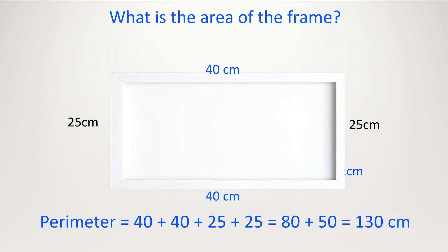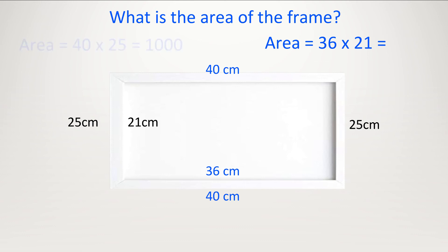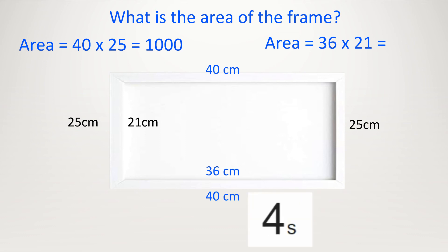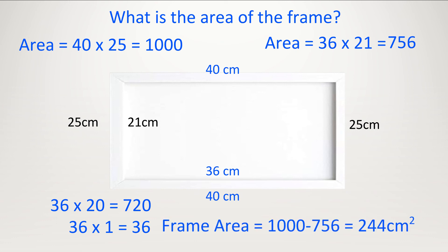What is the area of the frame? First let's work out the area of the whole thing — the frame and the glass. From the previous part we had 40 and 25, so 25 times 40 equals 1000. Now let's work out the area of the glass: 36 times 21. Pause the video and do it yourself. 36 times 20 is 720, plus 36 times 1 equals 36, so added together that's 756. Now to get the frame we do 1000 minus 756 and the answer is 244.